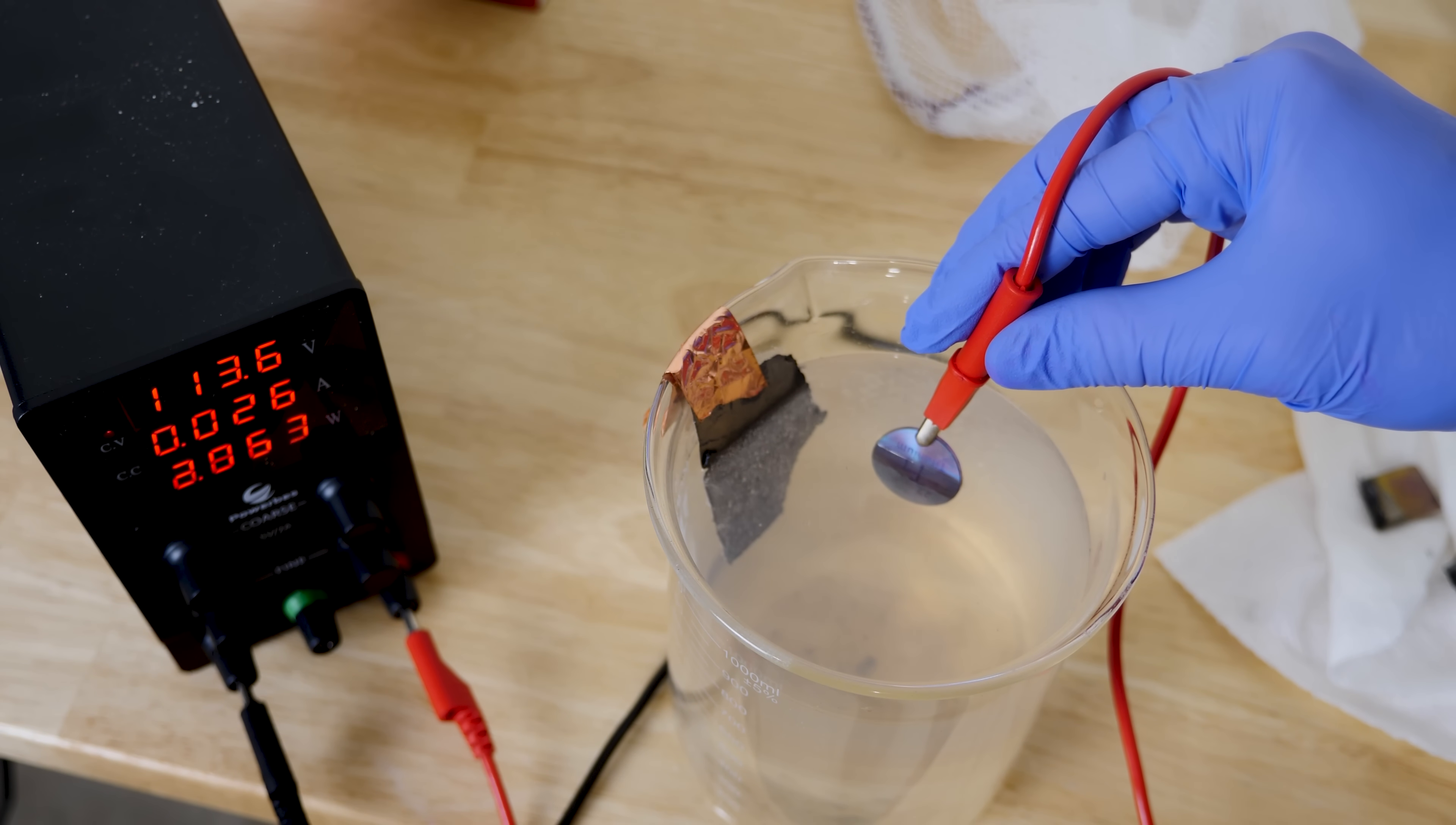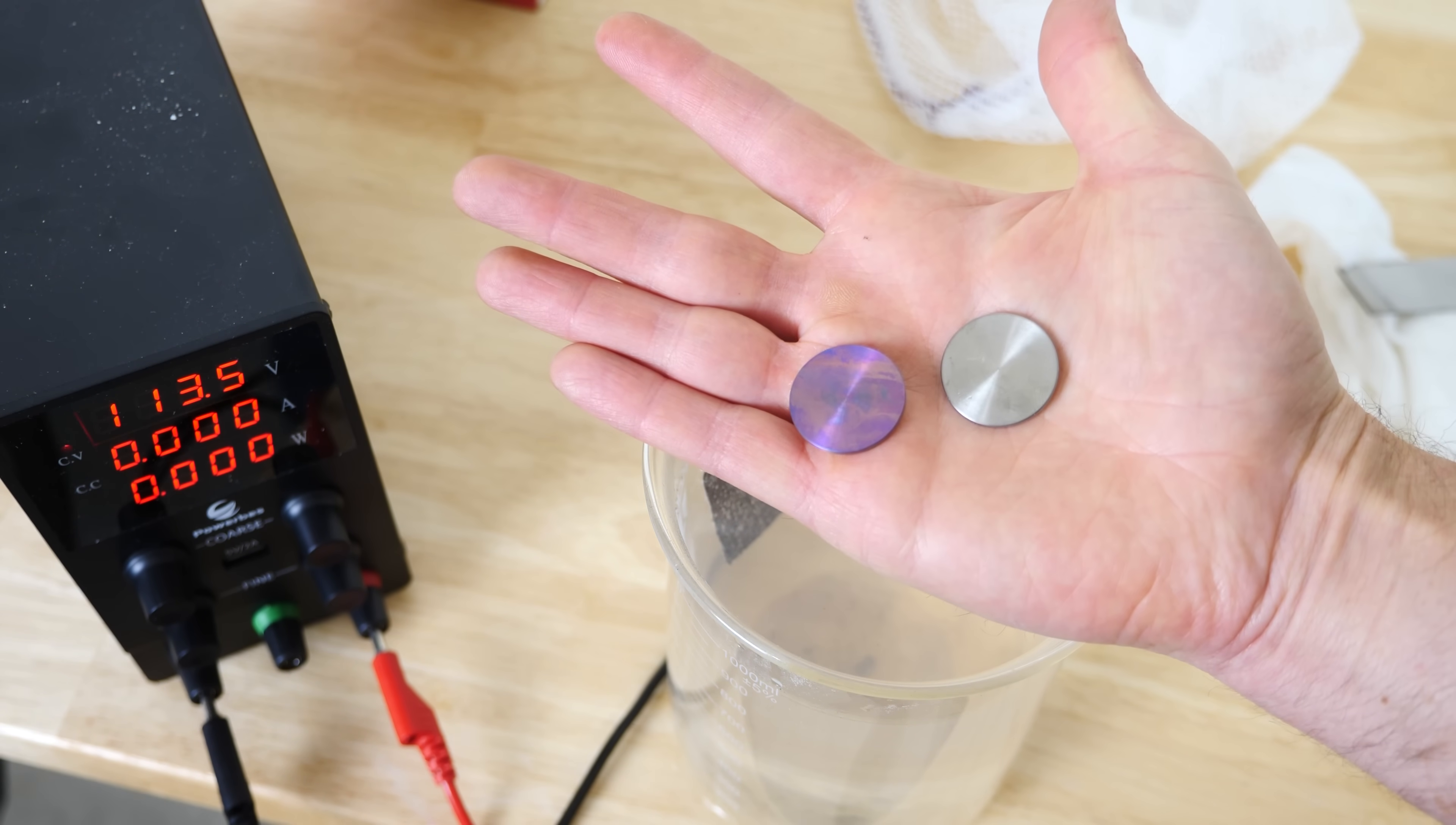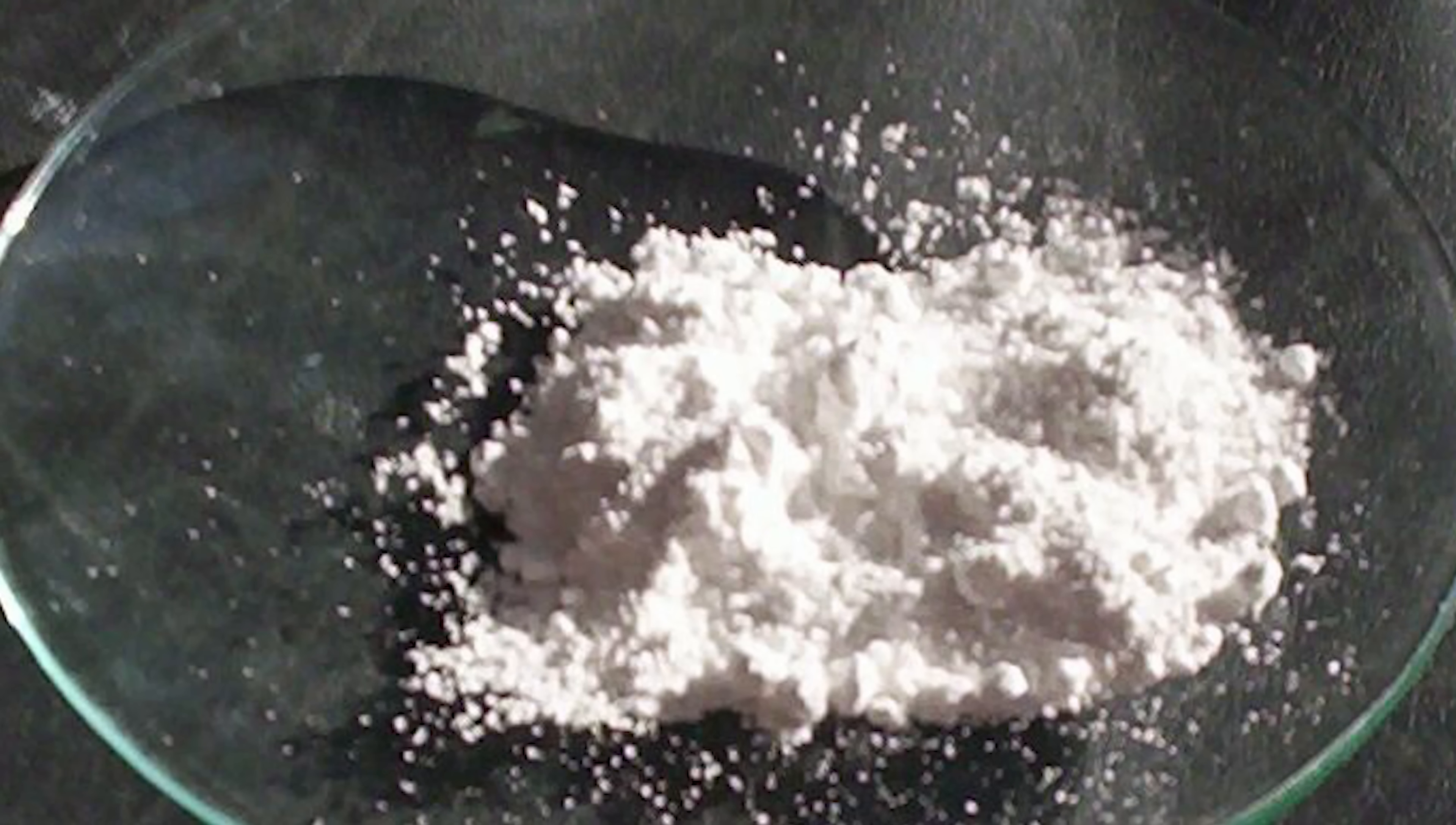The reason this is happening is because we're actually forming a small layer of titanium dioxide on the surface of the titanium. It's reacting with the oxygen in the air. But titanium dioxide is actually clear in color. It just looks white because of all the small little grains diffusing the light around.